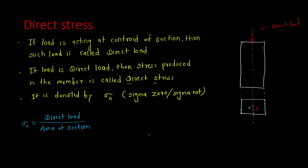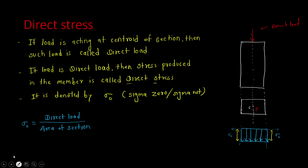Now, how do we represent direct stress variation? The direct stress is represented with this zero line, and the value here is sigma 0. This distance is sigma 0 throughout. As you can see, the direct stress variation is constant throughout the member — this variation does not change.